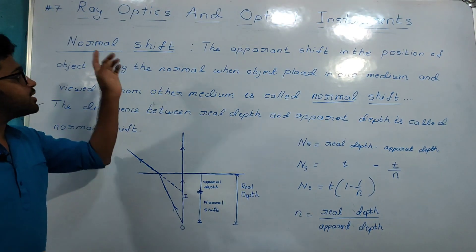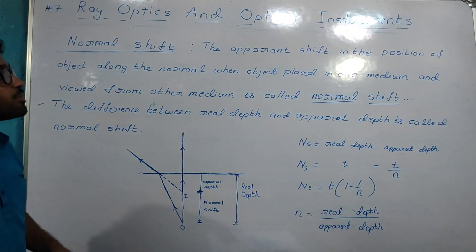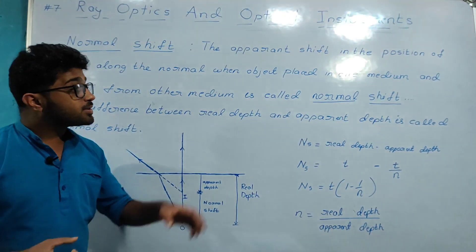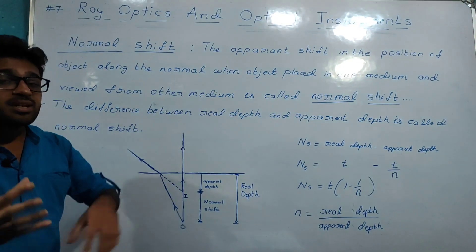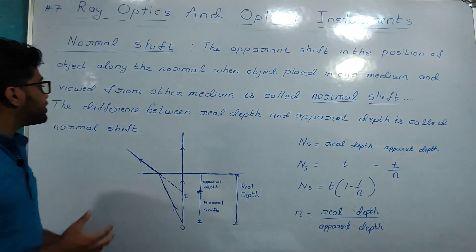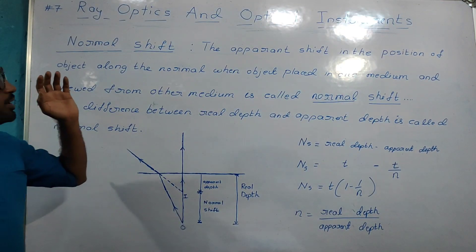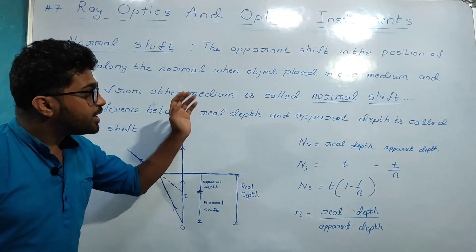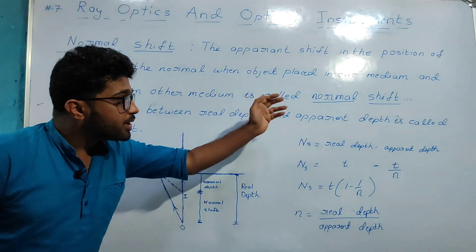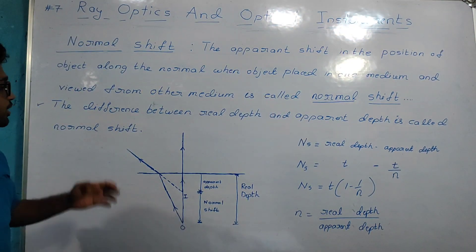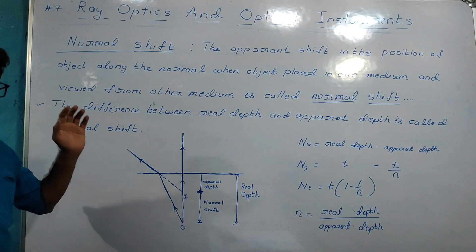The difference between the real depth and the apparent depth is called normal shift.